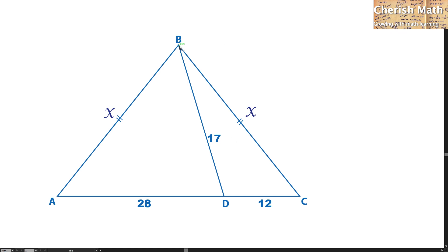Let me draw a line from B right to the midpoint of the line AC, and this is how it looks like. The entire length of A to C is 28 plus 12, and that is 40.